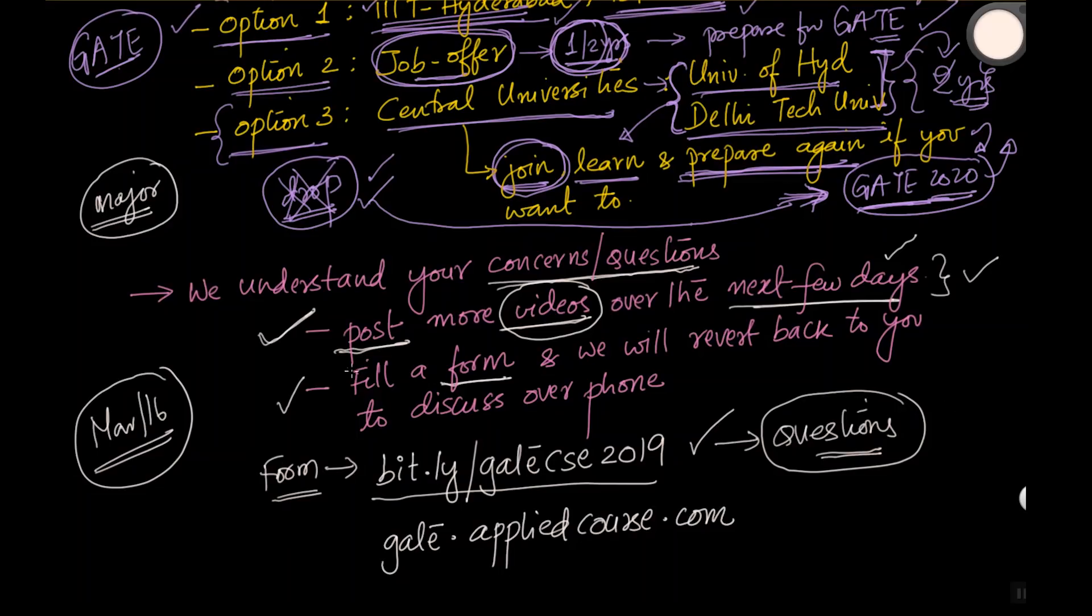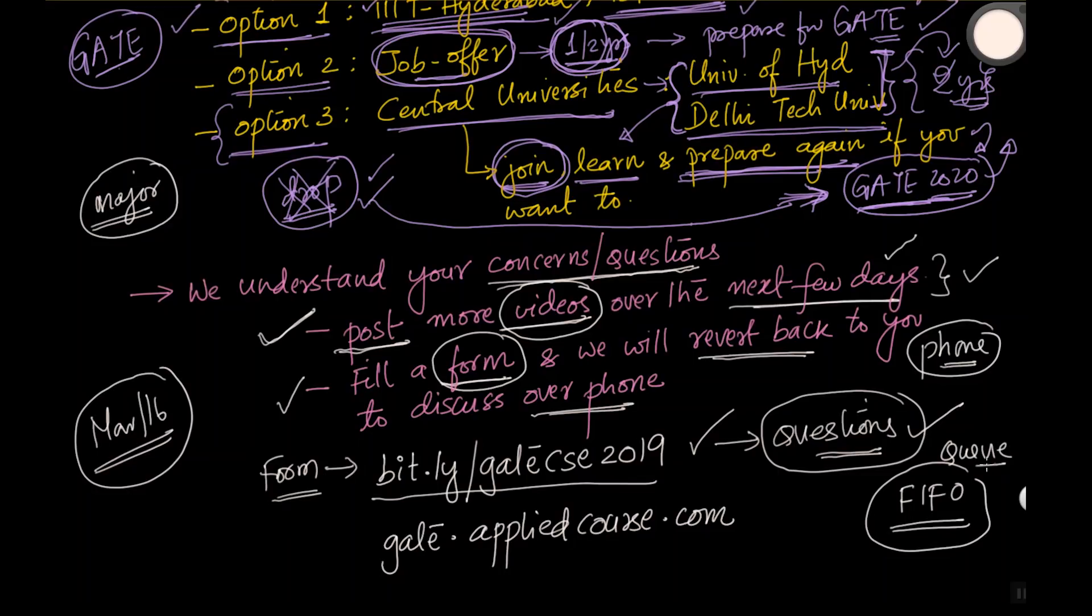So the way we are thinking of answering as many questions as possible is, please fill in this form and we will revert back to you over phone. So we will try and make a phone call to as many students as possible to discuss your question that you have put in over phone and we will try to find the best person in our team to address your questions. Number two is, we may not be able to answer every student. Please understand that we have limited manpower on our front. So we will answer questions on a first come first serve basis or a first in first out basis. This is your standard queue, queue data structure in computer science.